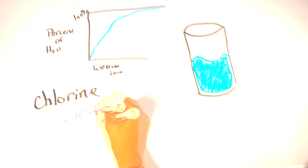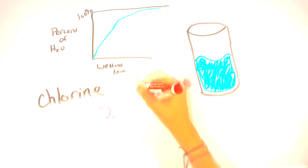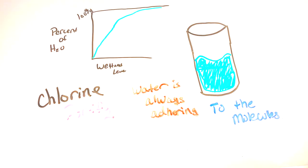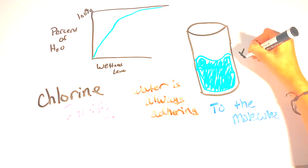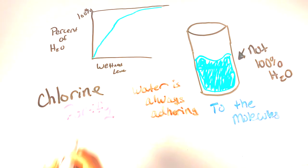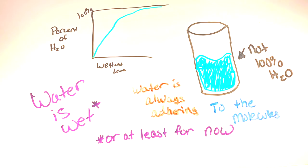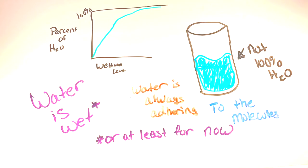So whenever we use the term water, there's always something else in there, which therefore means that water is always wet. The only caveat is that if we could make 100% water, then it would not be wet. So in the end, it's all best to agree that water is indeed wet, or at least till we can make 100% water.